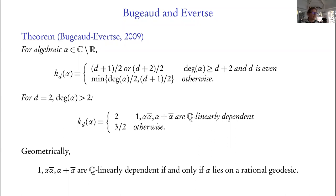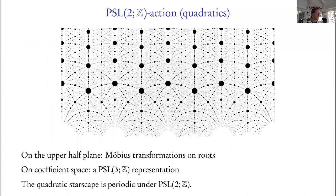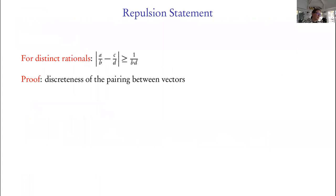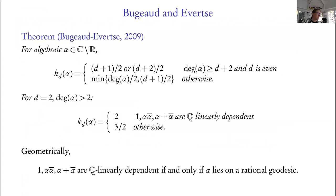This algebraic condition distinguishing the cases has a geometric interpretation. They are Q-linearly dependent if and only if α lies on one of the rational geodesics in the picture. These rational geodesics correspond to planes in the coefficient space that capture a two-dimensional sub-lattice of the Z³ lattice. I'll call these rational coefficient geodesics. The statement says: if you're on a rational geodesic, the exponent is larger — you are better approximable.